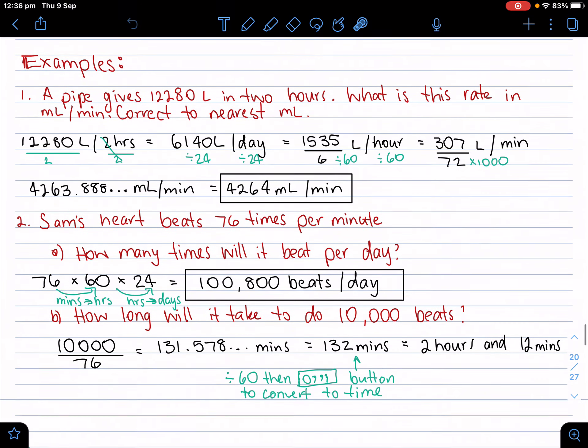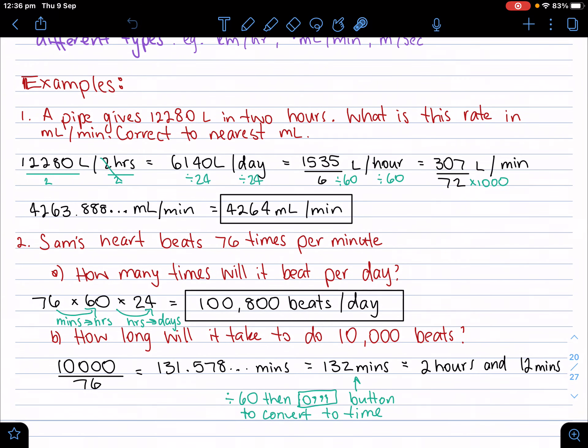Let's jump into a few examples. Example one says that a pipe gives 12,280 liters in two hours. What is this rate in milliliters per minute, correct to the nearest milliliter?